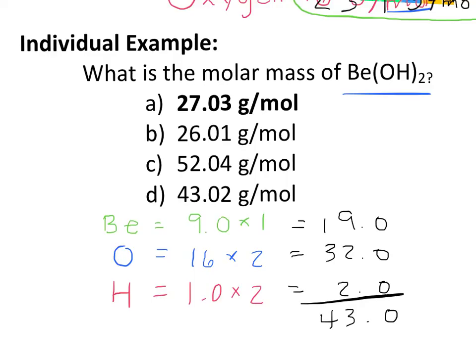So I knew that I had one Be atom, I have two oxygen atoms, and I also have two hydrogen atoms. So 9.0 times 1 is 9. 16 times 2 is 32. And 1.0 times 2 is 2.